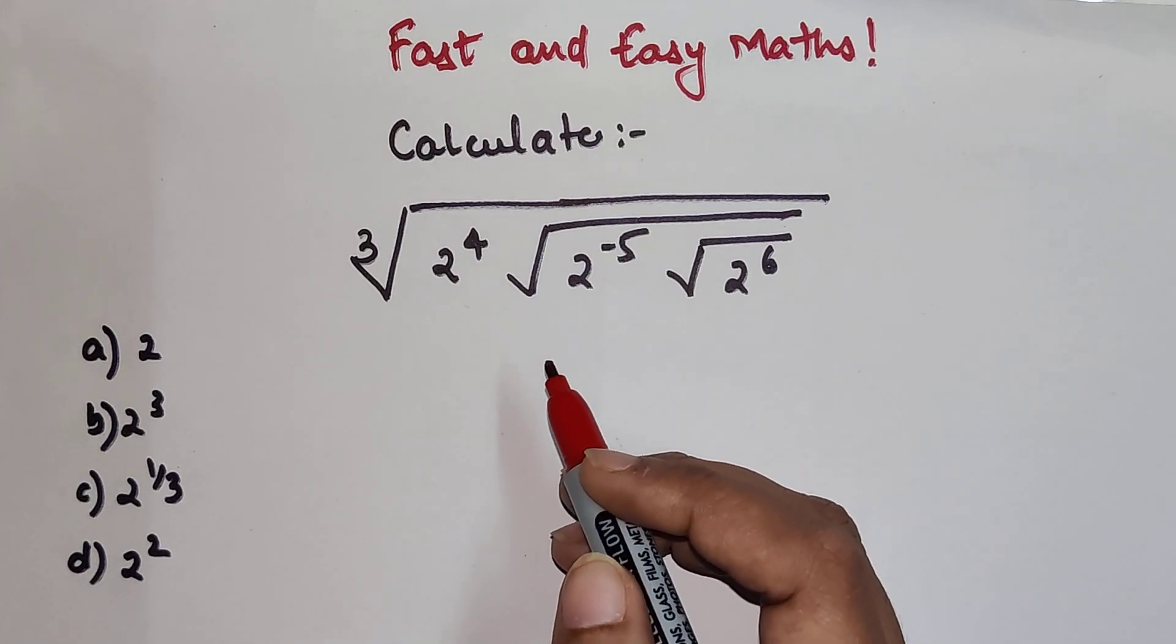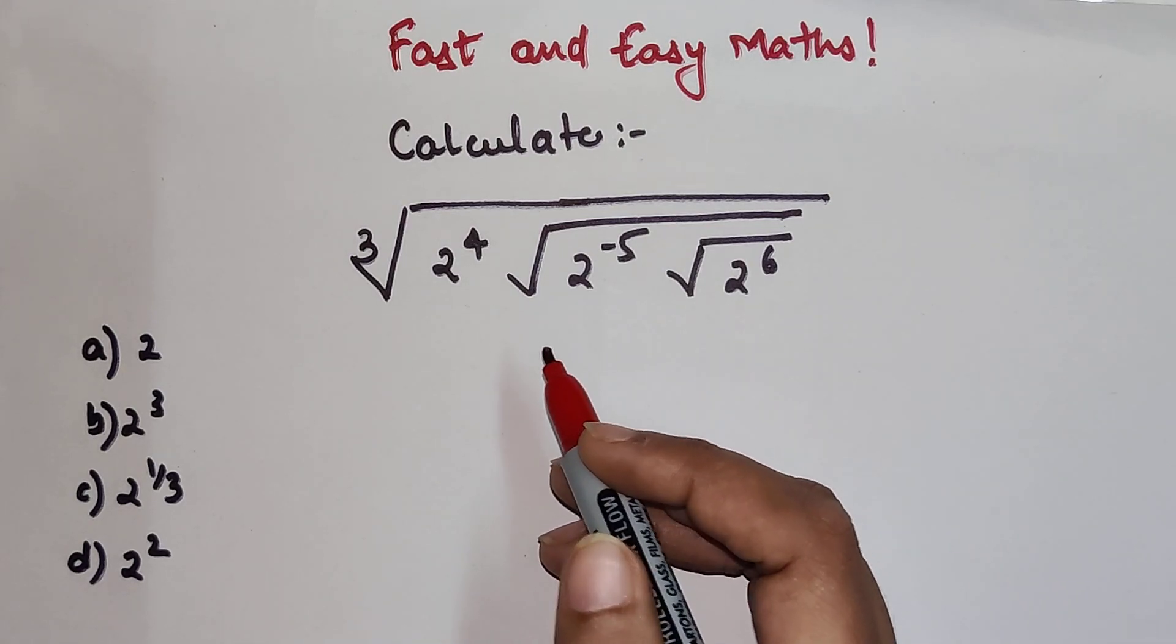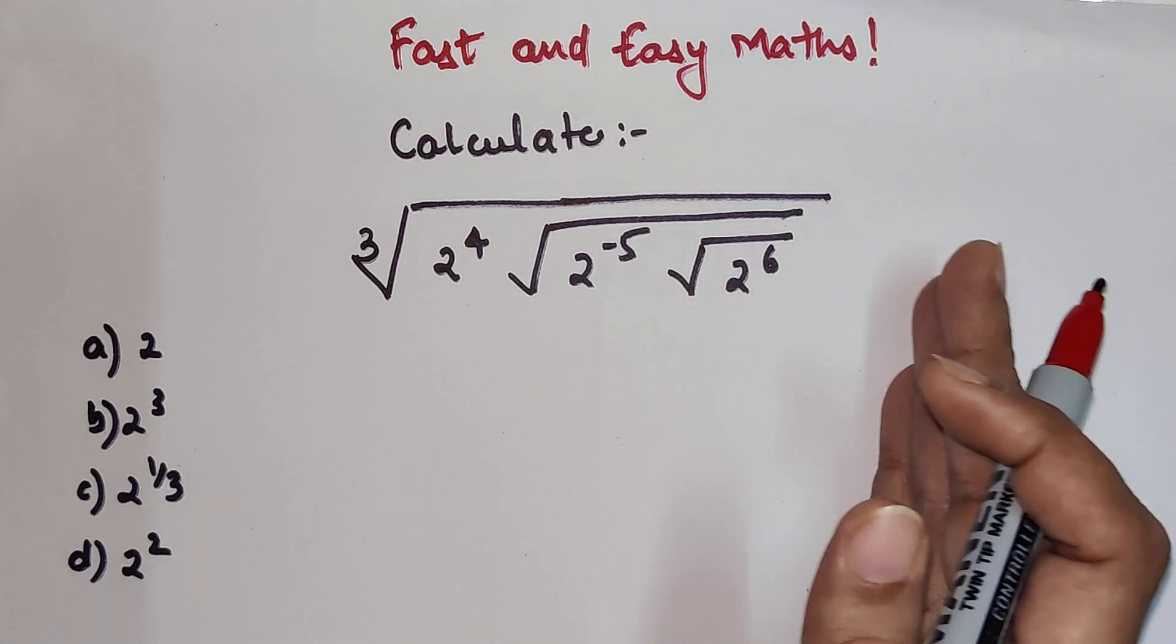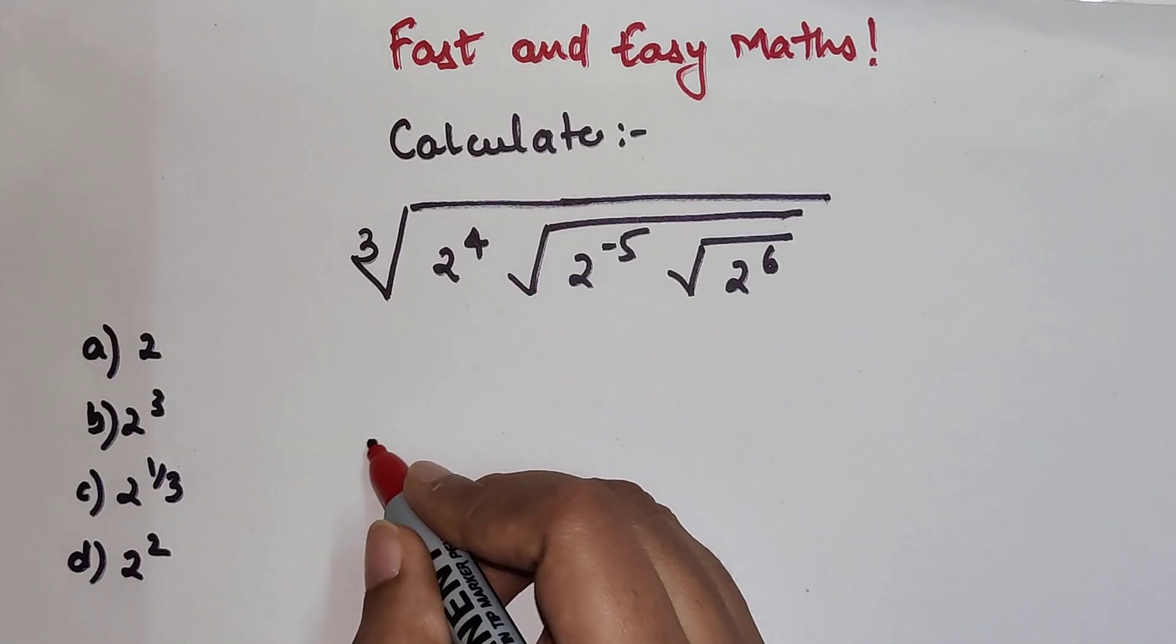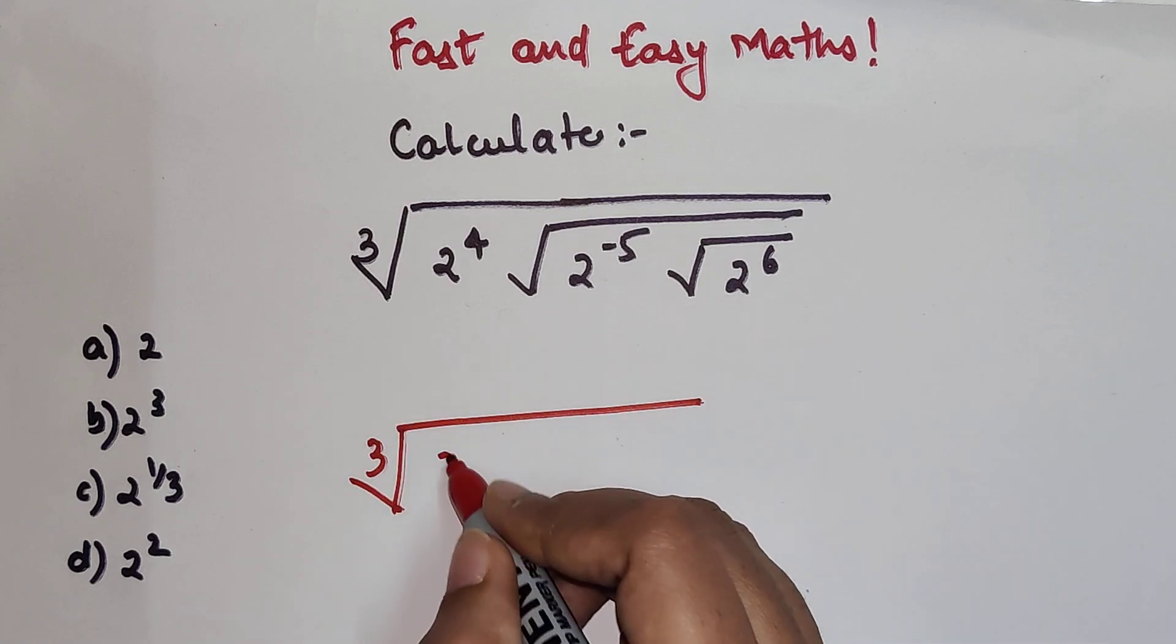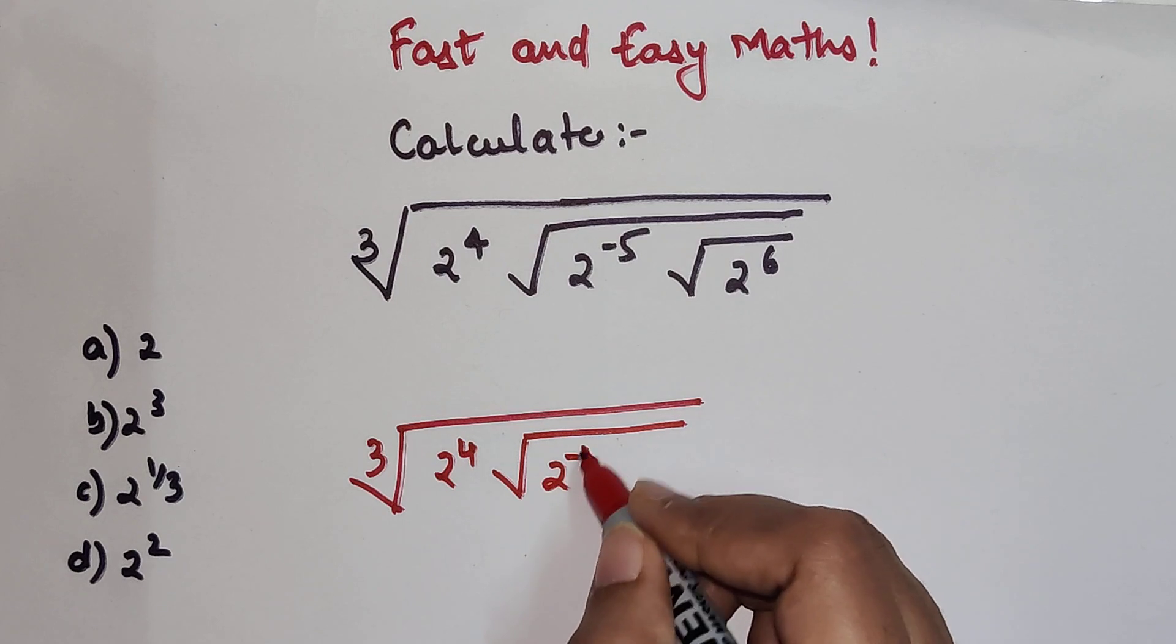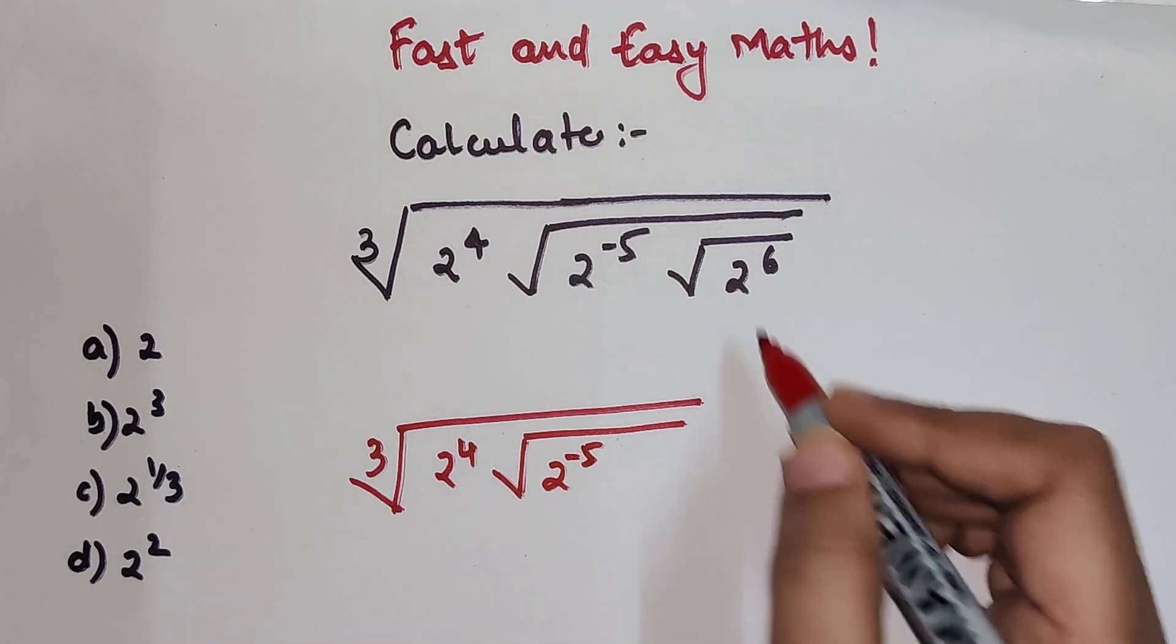So in such a case many people got stuck because they made a slight error. So first we will begin with the innermost square root. So we will keep the rest as it is: 2 raise to 4, this will be 2 raise to minus 5 and 2 raise to 6 under a square root.